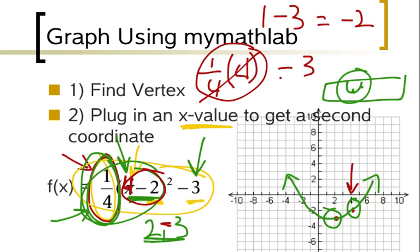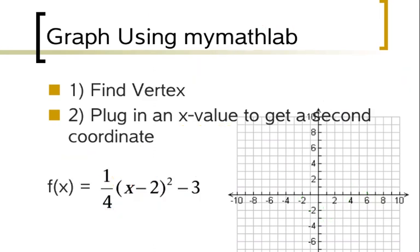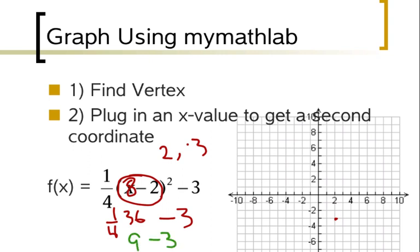Speaking of the last problem, let's plug in one more point just so that hopefully what I did was making sense. So again, I saw my vertex was 2, negative 3. Let's say I wanted to pick 8. 8 minus 2 would be 6, 6 squared would be 36, and then times 1 fourth. 36 divided by 4 and then minus 3.